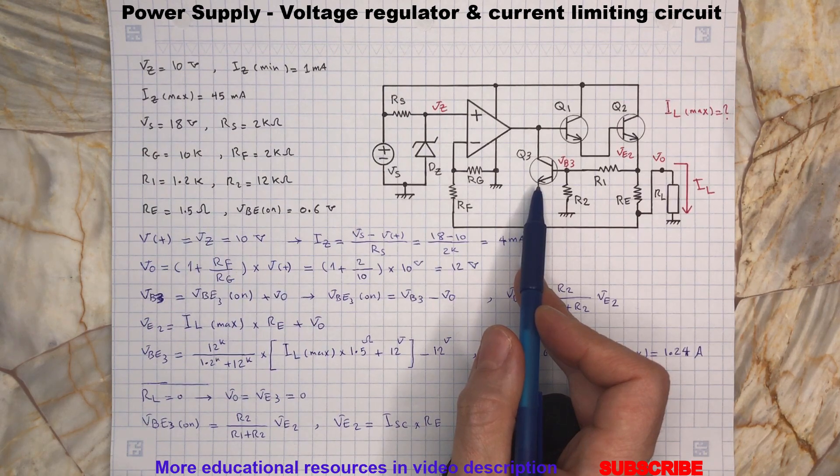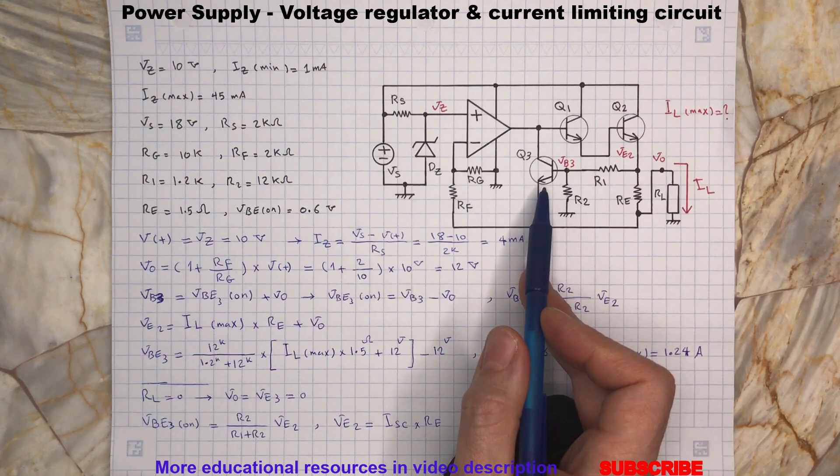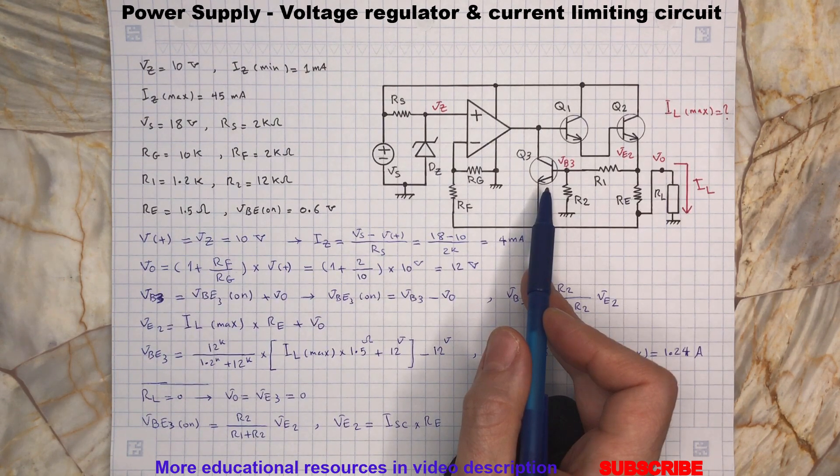So in order for transistor Q3 to turn on and limit the output current we should have VBE3 equal to 0.6V.